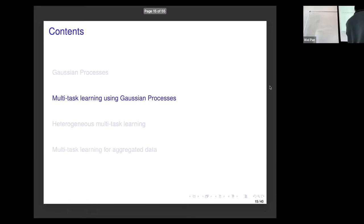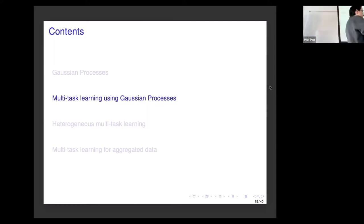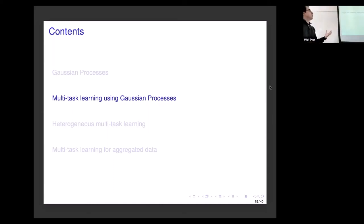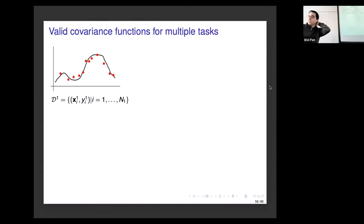That's a quick intro to Gaussian processes. Now I want to build the dependency structures I was talking about using this framework. The most important thing I need to define is my covariance function. One simple approach would be to assume all tasks are independent — just treat each task separately without learning any dependency between them.